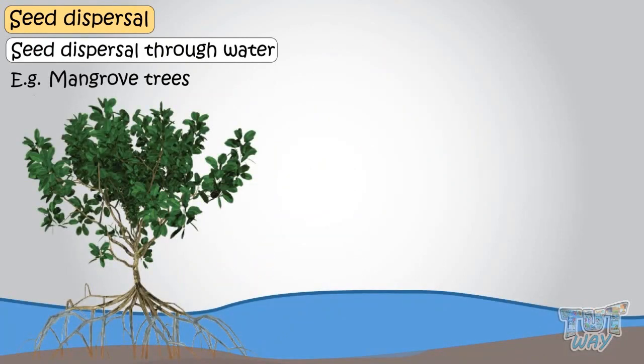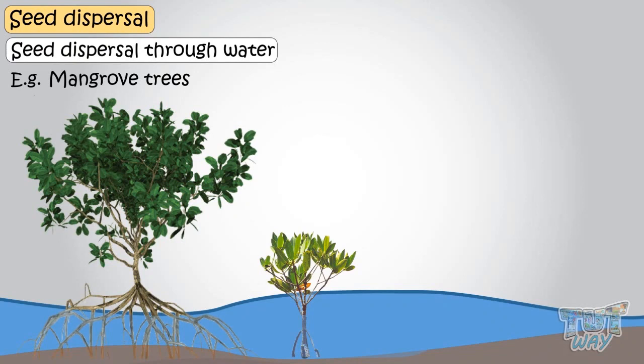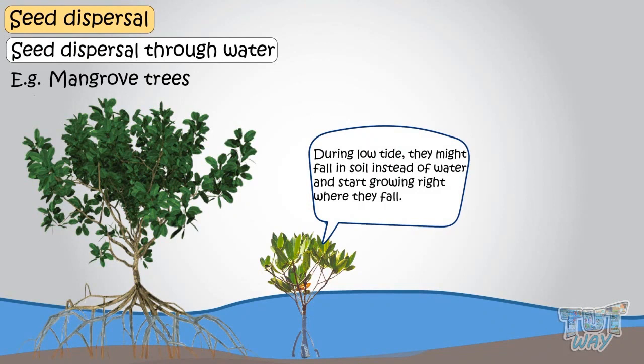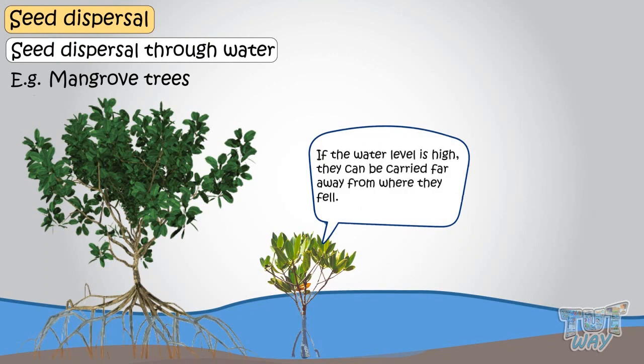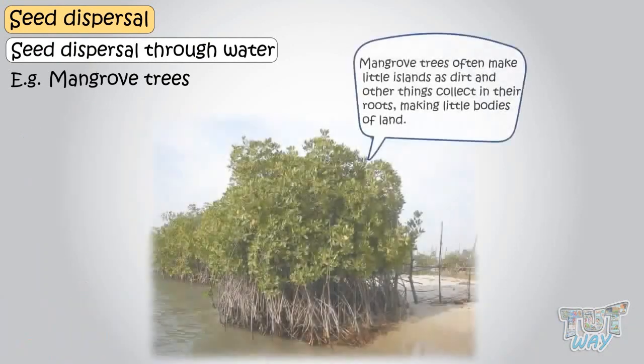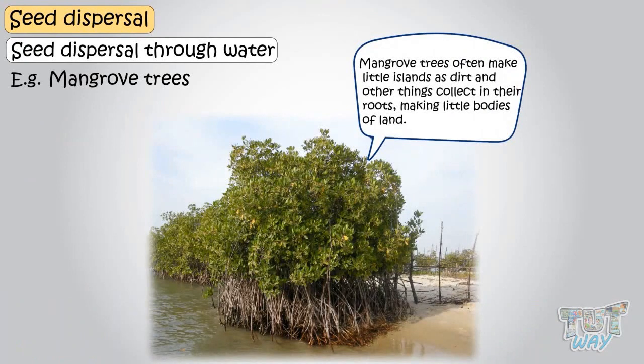Mangrove trees live right in the water. Their seeds fall from the tree and grow roots as soon as they touch any kind of soil. During low tide, they might fall in soil instead of water and start growing right where they fell. If the water level is high, however, they can be carried far away from where they fell, and the mangrove trees often make little islands as dirt and other things collect in their roots, making little bodies of land.